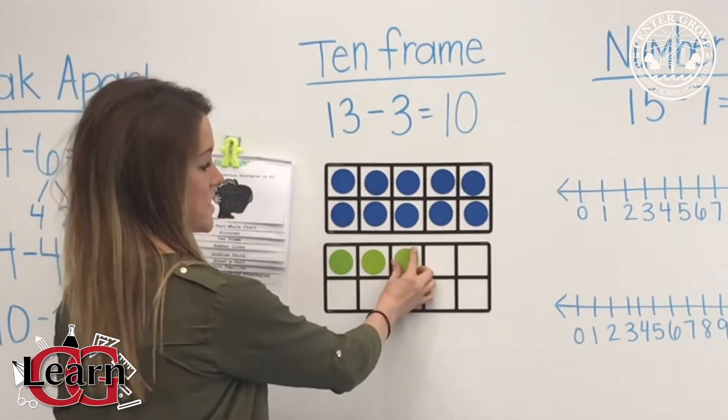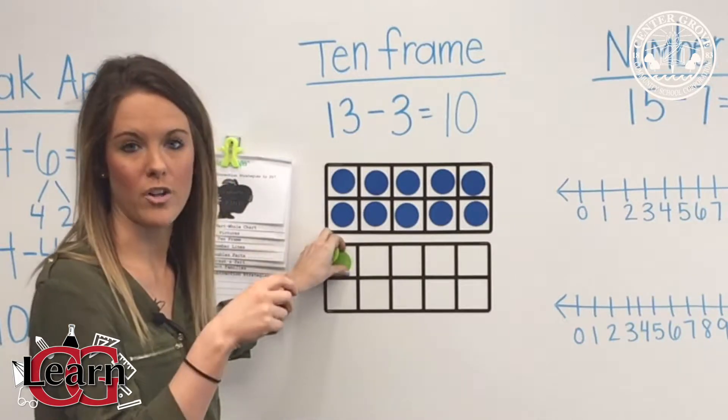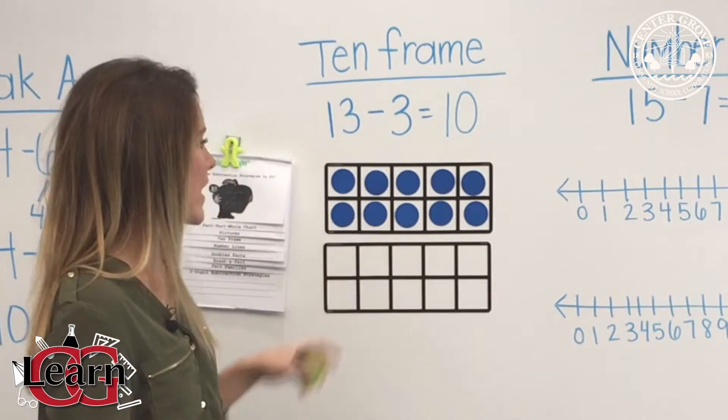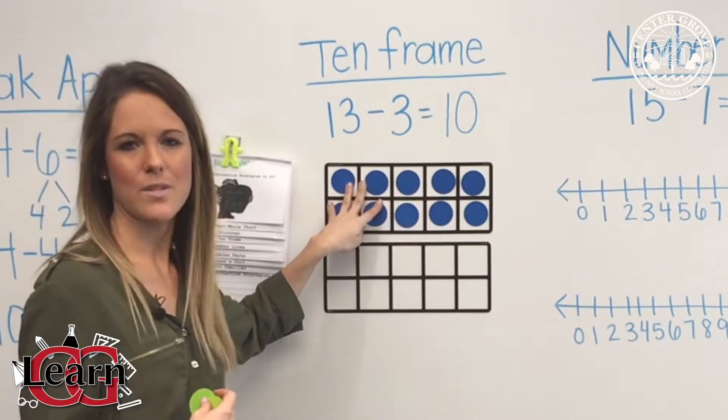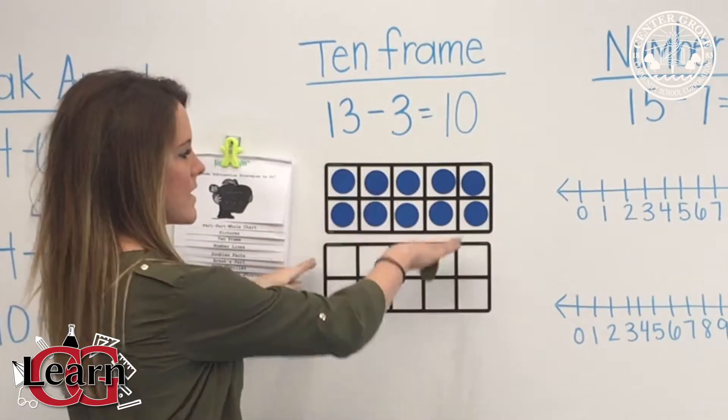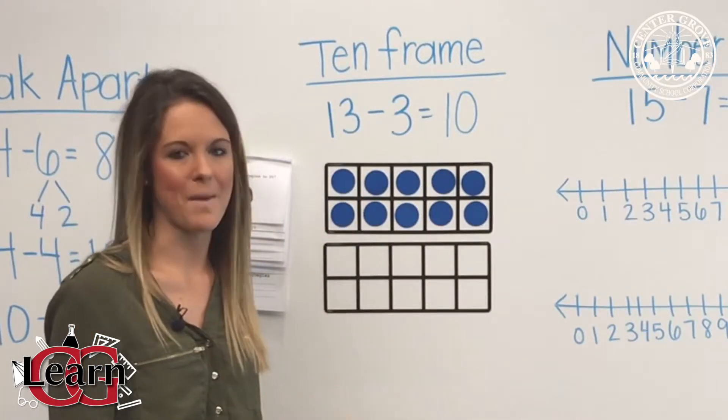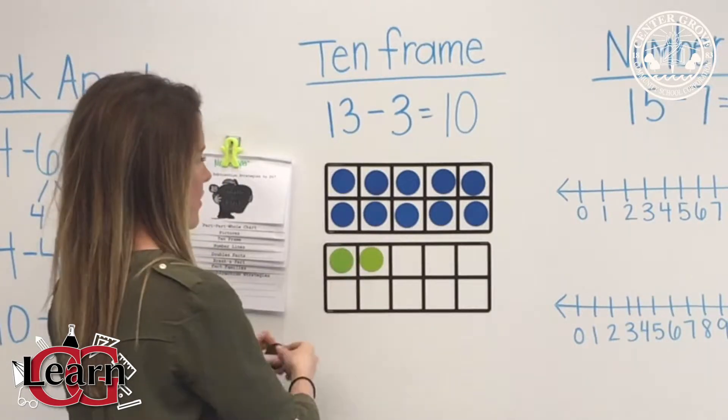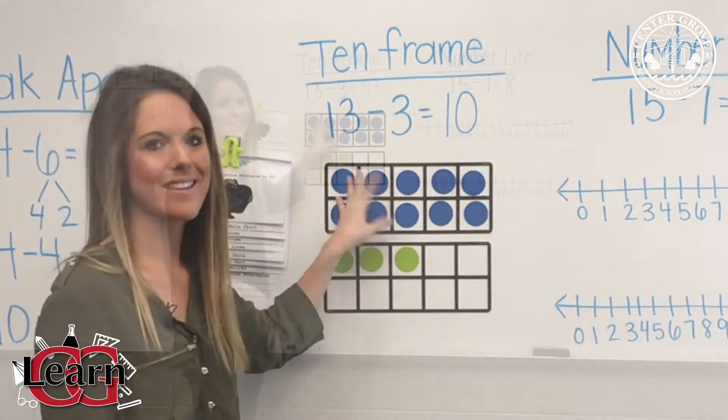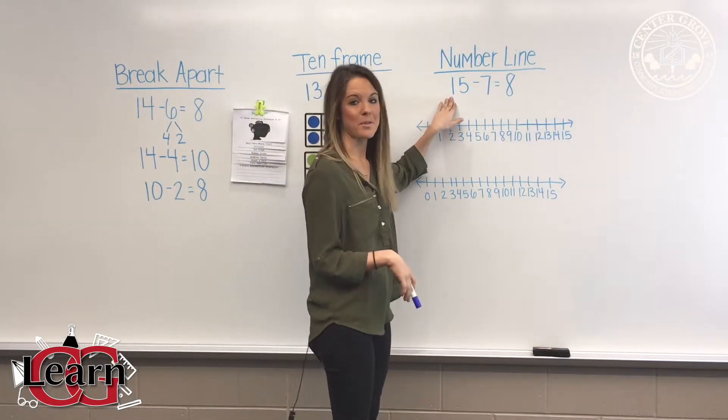Then we go ahead and just take these three away. Or if you were to draw it, you would just mark these three out, and then the kids can see that there's 10 left. I like using a ten frame because when you see a full ten frame, the kids know, oh well, if it's all the way filled, that's automatically 10. So you can go ahead and just mark those three out, and then they can physically see that there's 10 left.